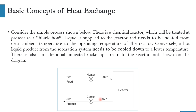The stream going from 150°C to 50°C is a hot stream, and the stream going from 20°C to 200°C is a cold stream. In other words, the hot stream is the one whose initial temperature is higher than its final temperature — 150 is higher than 50, so it needs to be cooled down. The opposite applies for the cold stream.